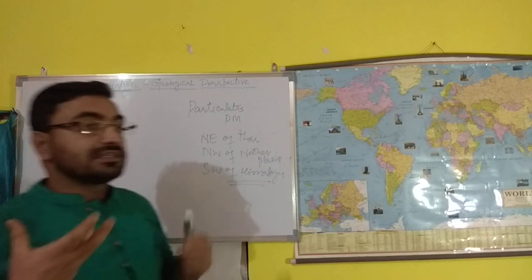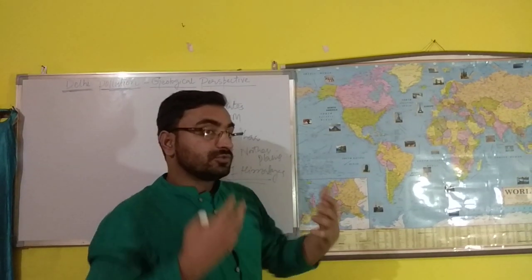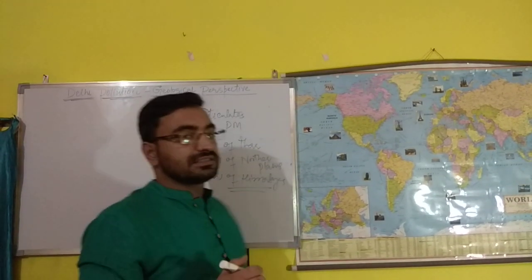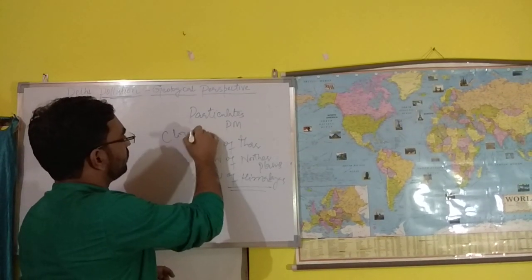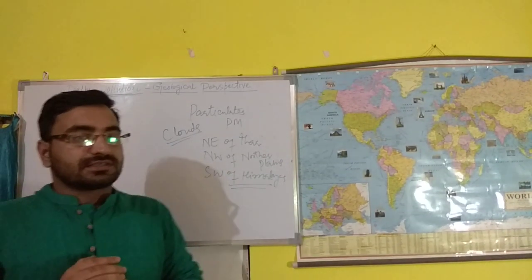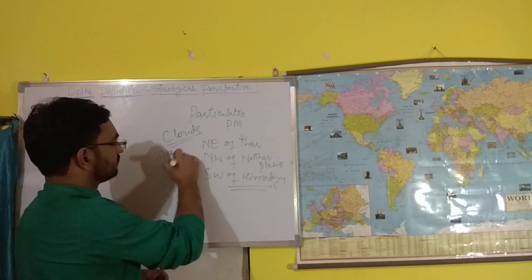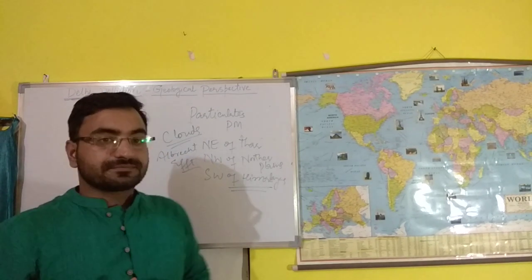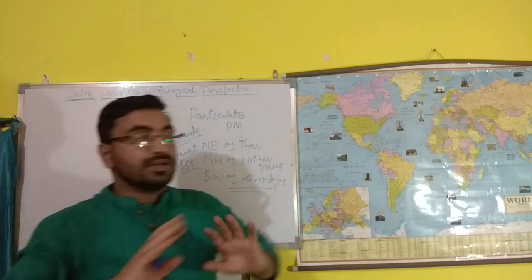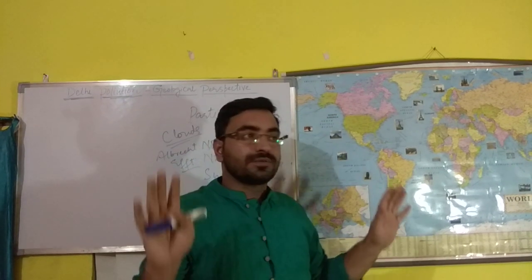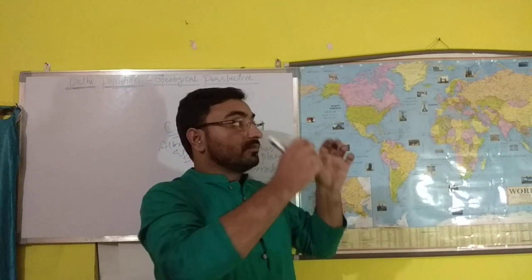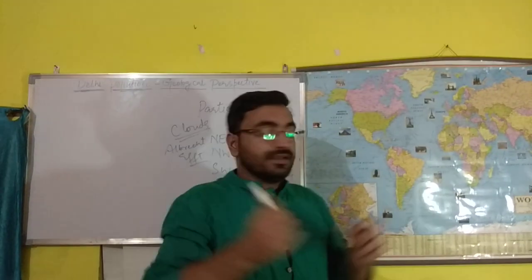Now there are certain effects to discuss from a geological perspective. First, the effect on clouds. When there is heavy pollution in Delhi, one major effect is what we call the Albedo effect. A lot of pollutants are in the atmosphere and there is a fixed amount of water droplets — what we call cloud droplets. When extra pollutants are added to the atmosphere, the water droplets get divided.